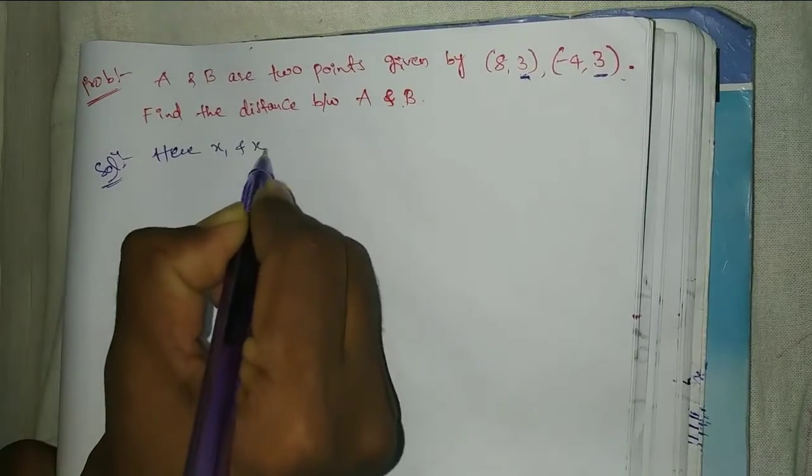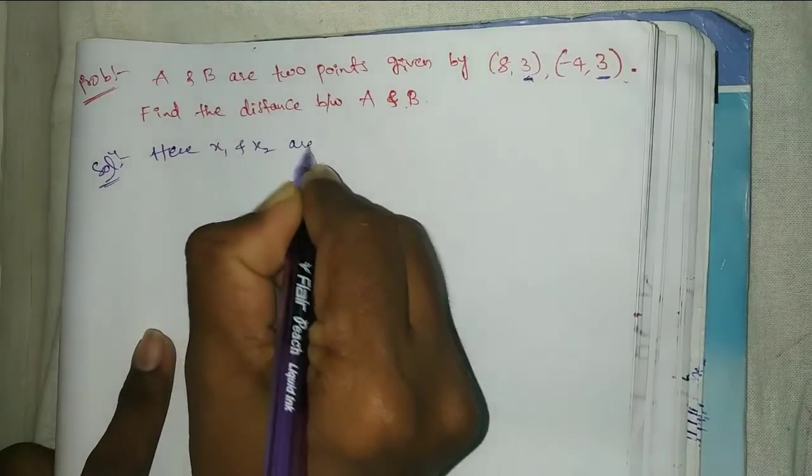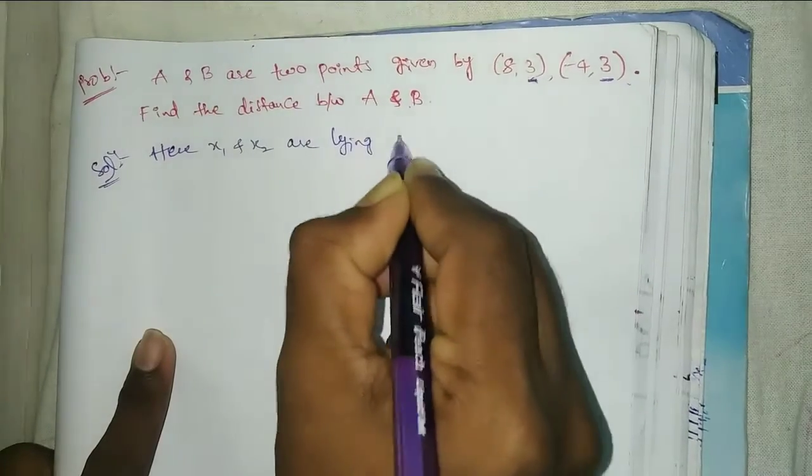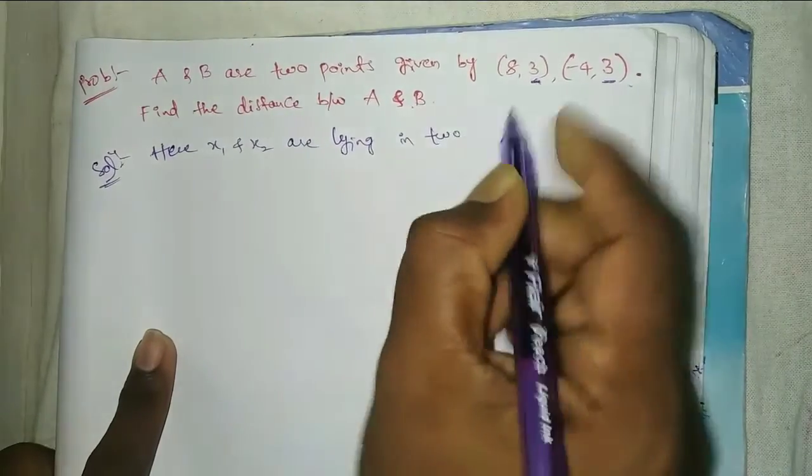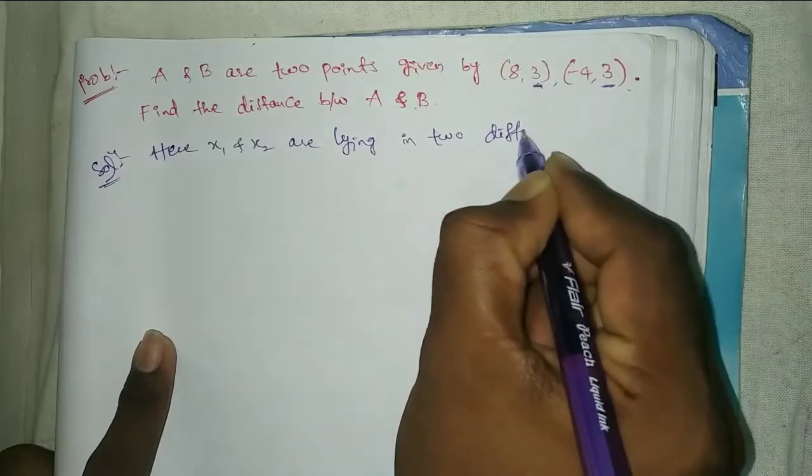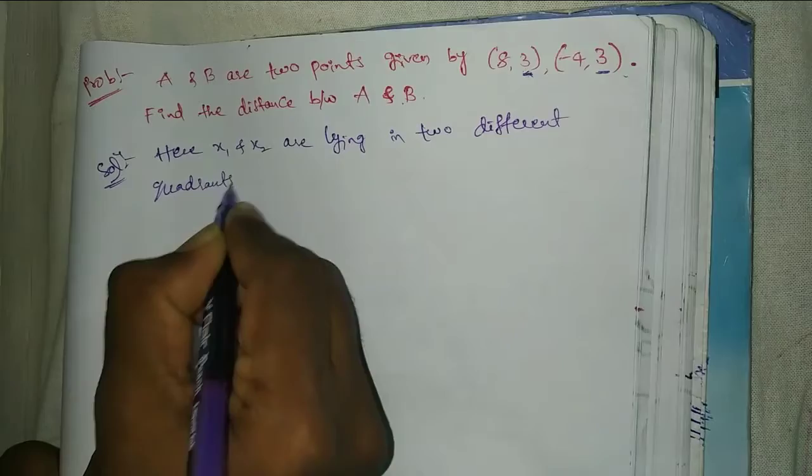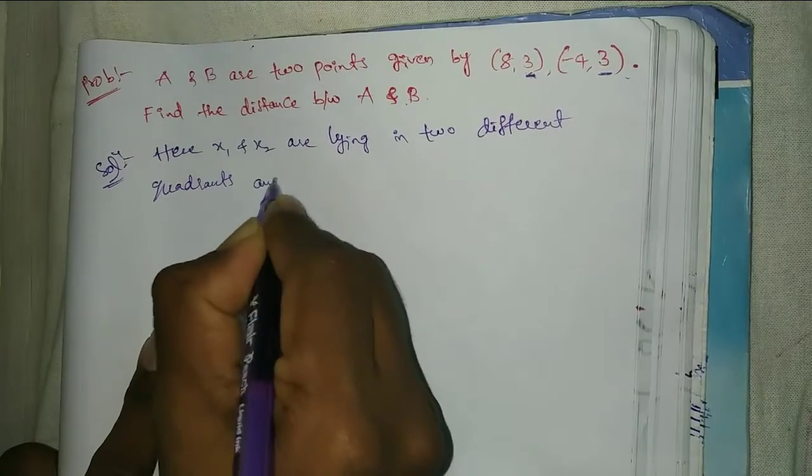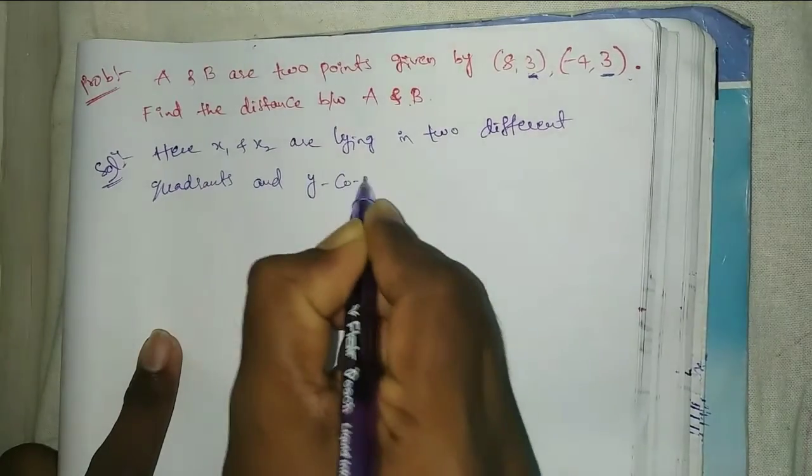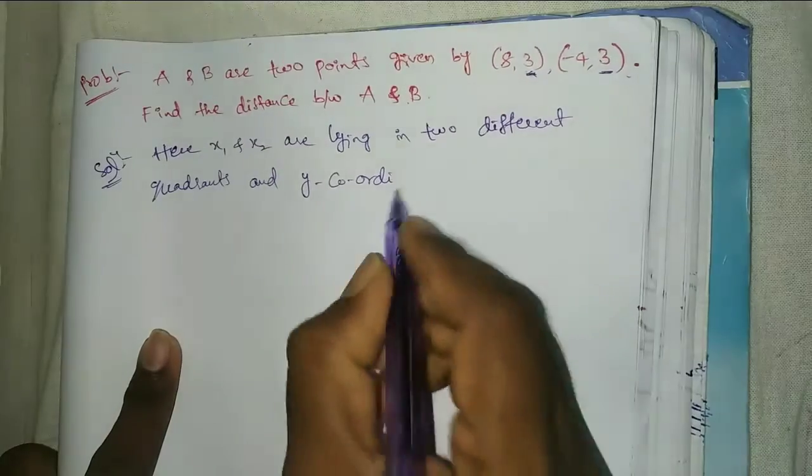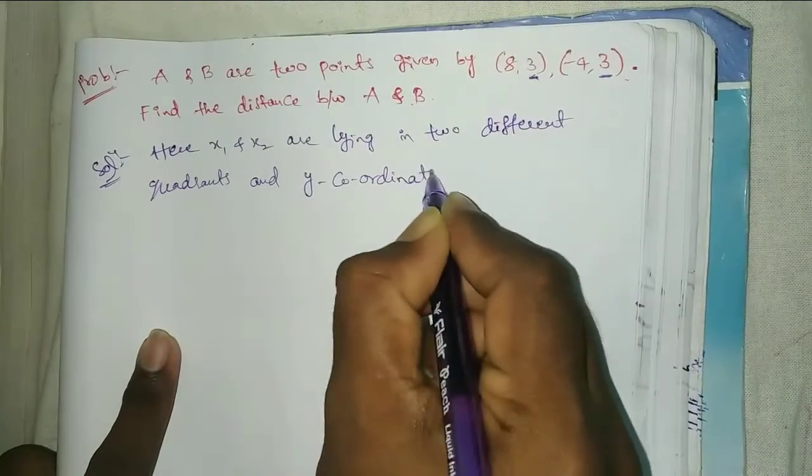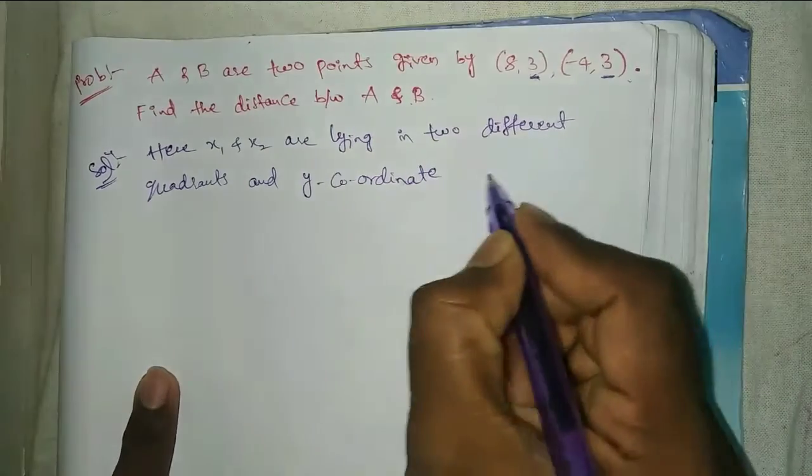X1 and X2 are lying in two different quadrants, and y-coordinates are equal.